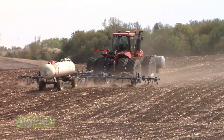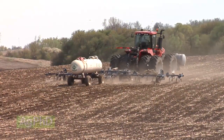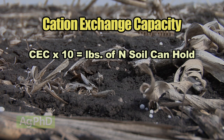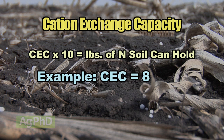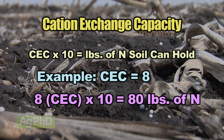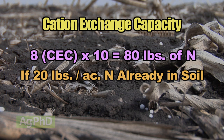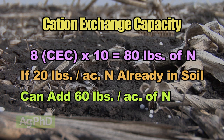With cation exchange capacity, the farmer gets a number and uses it to determine how much nitrogen can be applied at any one time. All he does is take the CEC number times 10. For example, if that number is 8, we take 8 times 10 — that soil will hold roughly 80 pounds of nitrogen at any one time. If there's already 20 pounds sitting in the soil, that means he can apply an additional 60 pounds. This is how we use a scientific measurement to determine how much nitrogen can be applied to that soil.